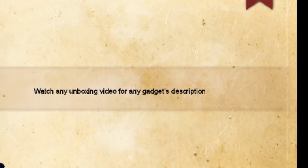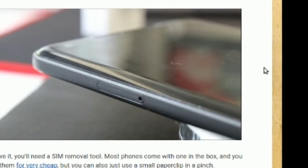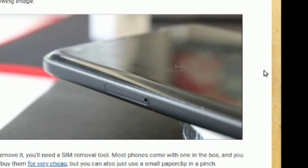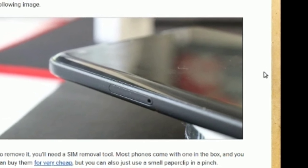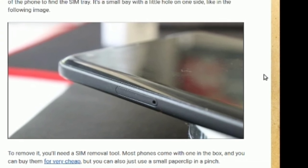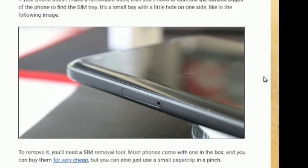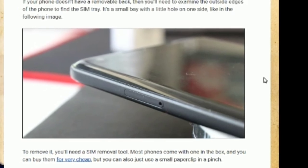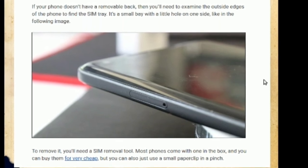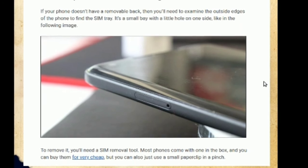Now describing processes: here we'll have an example of replacing a SIM. How to replace a SIM? Around the edge of the phone, if your phone doesn't have a removable back, then you will need to examine the outside edges of the phone to find the SIM tray. It's a small bay with a little hole on one side, like in the following image. To remove it, you'll need a SIM removal tool. Most phones come with one in the box, and you can buy them for very cheap.